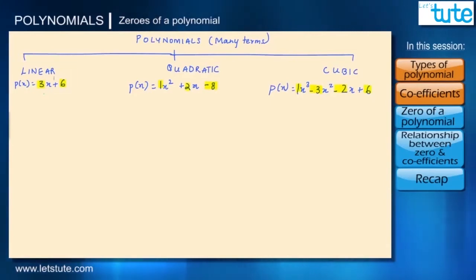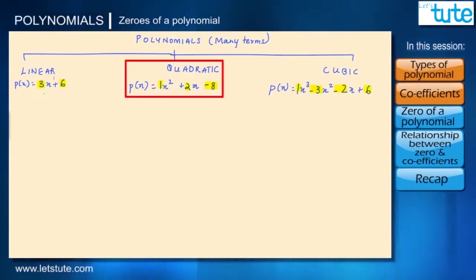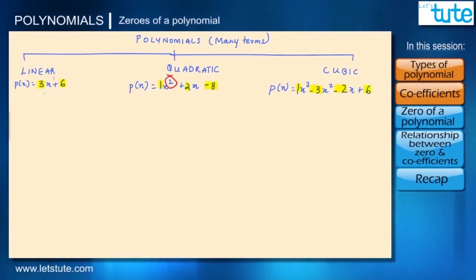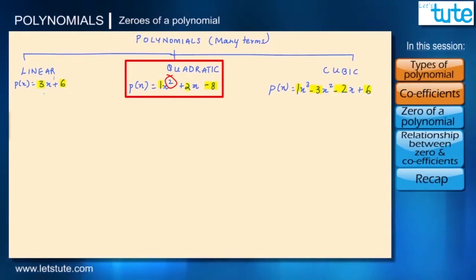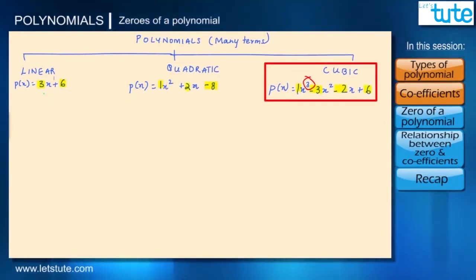The highest power for 3x plus 6 is 1, therefore it is a linear polynomial. The highest power here is 2, therefore it is a quadratic polynomial. And the highest power here is 3, therefore it is a cubic polynomial.